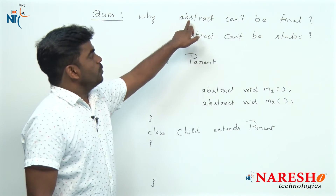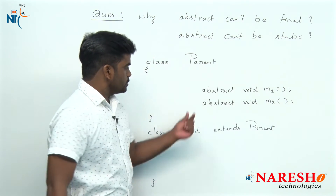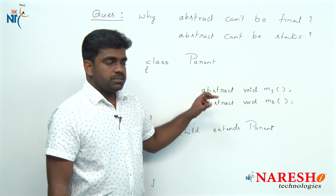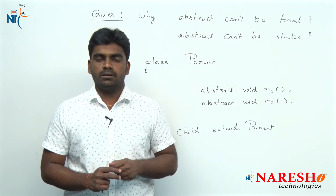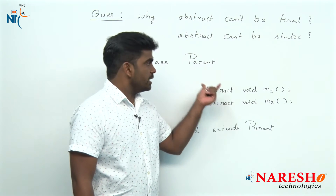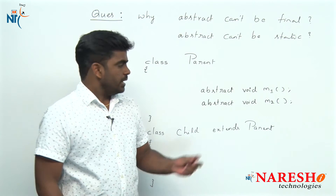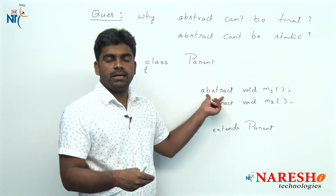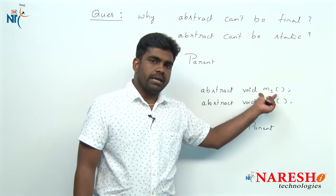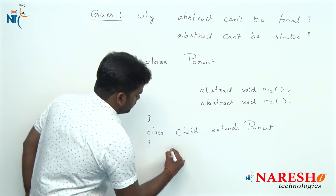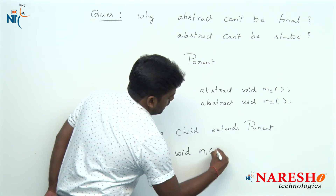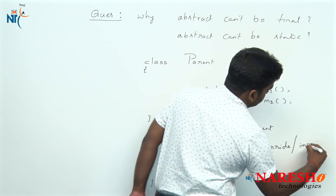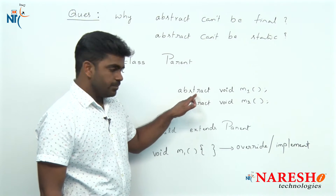First, why abstract cannot be final. The rule of an abstract method is that if there is a specification — just a declaration with no definition — in the parent class, you have to implement it in the child class. That means you must override that m1 method in the child class, providing a body. So we write void m1 in the child — this is called overriding or implementing: providing a definition where the parent only had a declaration.